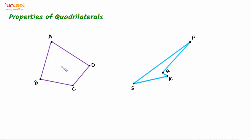There are four angles in a quadrilateral. In the first quadrilateral, the four angles are easily identified. In the second quadrilateral, the four angles are slightly trickier to identify, but we can find all four angles including the third and fourth angles.